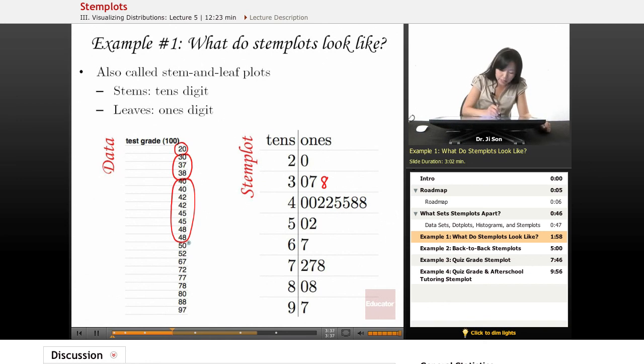And then let's look at those who scored in the 50s. There's one person who scored 50 and one person who scored 52. And then 67. So I put the six here and the seven here. For the 70s, there's three people. So I put the two, the seven, and the eight, the ones places. And for the 80s, there's two people, the zero and the eight. And for the 90s, there's just one person who got a 97.